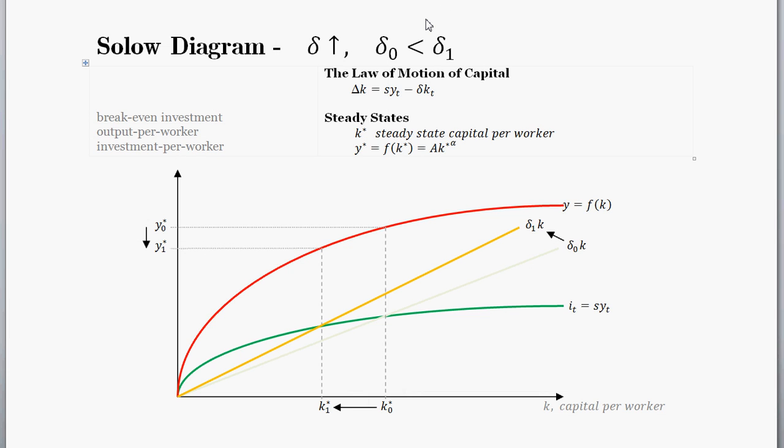Intuitively, we increased depreciation in the economy, so a greater portion of capital is being destroyed each period. It's not unreasonable to assume that people are worse off from that. If it's more expensive to maintain the capital stock, you have to give a higher portion of your savings just to maintain the same amount of capital stock. It's reasonable to assume that consumption is going to decrease. That's the intuition behind this result.